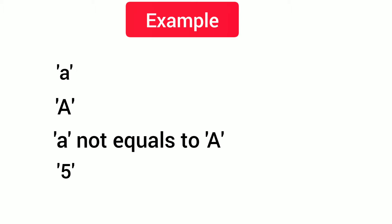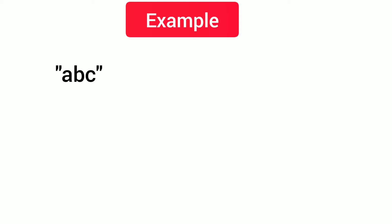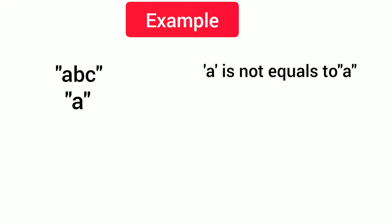Now, string constant — one character or more than one character enclosed within double quotation marks is known as a string constant. For example, "abc" enclosed within double quotation marks is a string constant. Even a single character like "a" within double quotation marks is a string constant. Note that a single character constant 'a' does not equal the string constant "a".